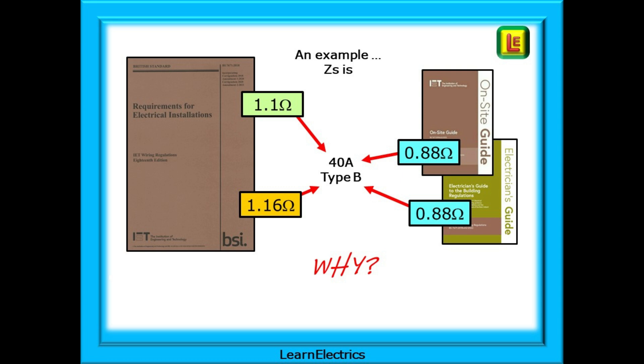Let's just take any example, a 40 amp type B breaker for instance. In the brown regs book we have two values for ZS for the same breaker, and then the on-site guide and the electrician's guide show a third value. Why is this and what's going on?